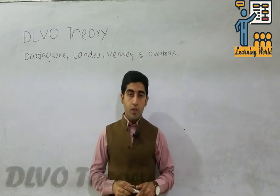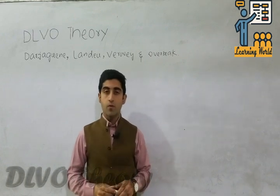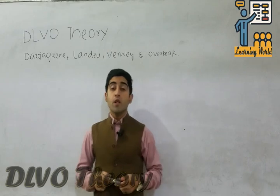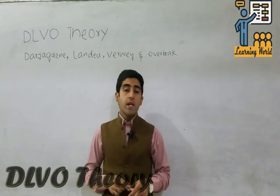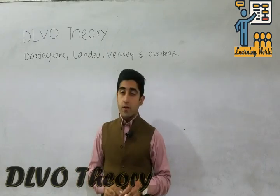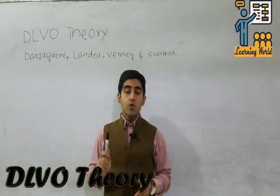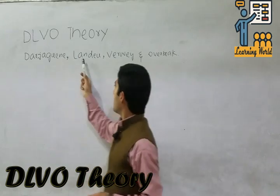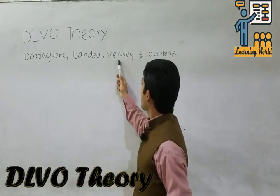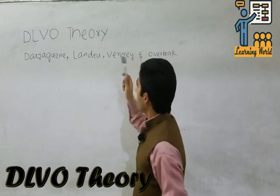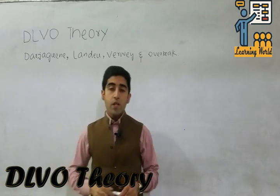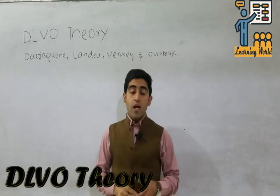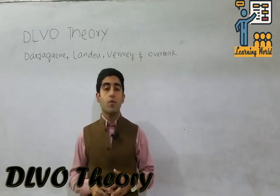Starting in the name of Allah the most gracious the most merciful. In this section we will discuss the DLVO theory. DLVO is an abbreviation for four scientists' names: D means Derjaguin, L means Landau, V means Verwey, and O means Overbeek. This theory is produced by these four scientists.